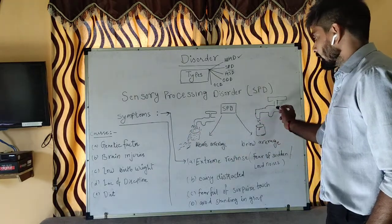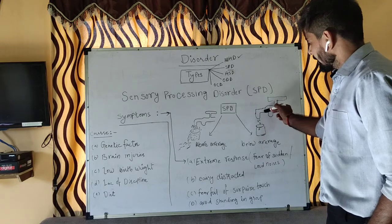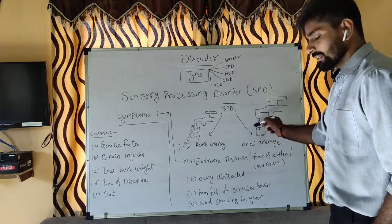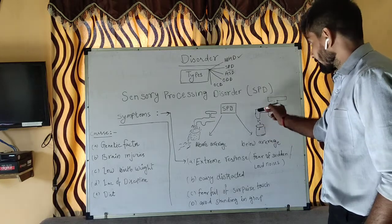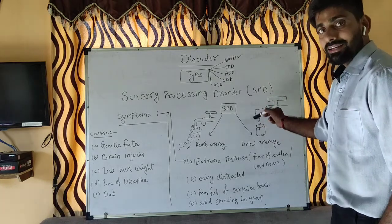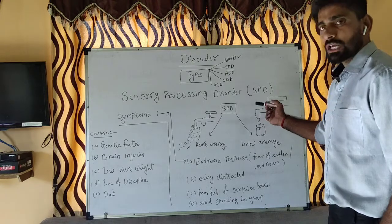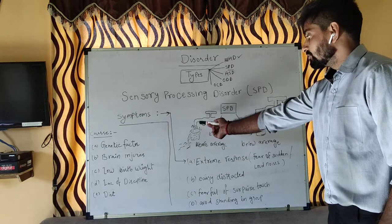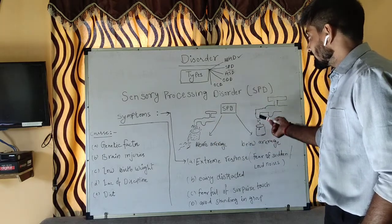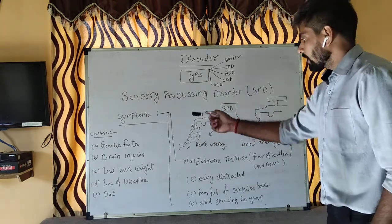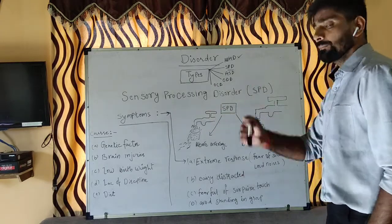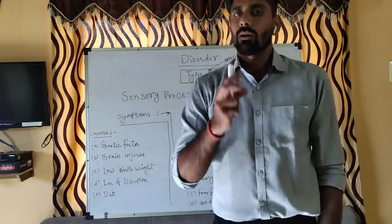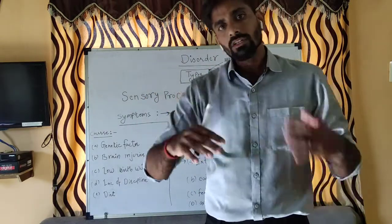Now let's talk about below average. In this second example, we are looking at a bucket that is completely empty. The demand is high but the supply is very low — just a drop of water coming in. It will take a lot of time to fill. So this example is below average. With Sensory Processing Disorder, our senses are either above average or below average.